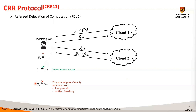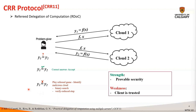If the clouds claim different results, then the referee or the problem giver should be able to determine the malicious cloud with high probability. In this case, the problem giver engages in a challenge-response protocol with each of the clouds to find inconsistencies between the intermediate states of the two clouds' computation using a binary search approach. Once the disagreement point is identified, the problem giver executes a single step of the computation by itself and detects the malicious cloud. The advantage of this CRR protocol is that it provides provable security for any efficiently computable function and guarantees correctness.